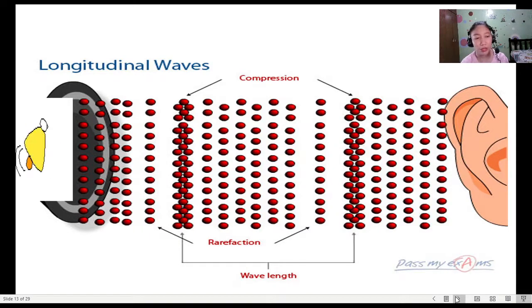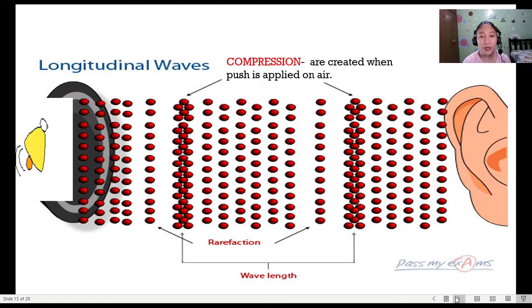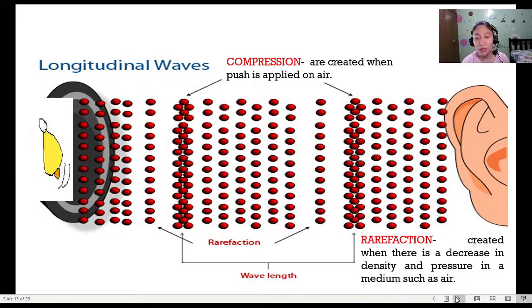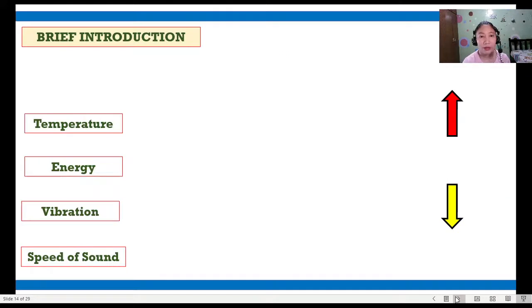When we say compression, na yan, nakita niyo yung two arrows. They are created when push is applied on air. Pag na-push siya, magsisiksikan sila, compression yun. And then, pag nabatak sila, rarefaction. Rarefaction is created when there is a decrease in density and pressure in a medium, such as air. Yung ating air, layo-layo. Less dense siya. Decrease ang kanyang density. Kaya, itsurang layo-layo. That's rarefaction. From rarefaction to another rarefaction, isang wavelength yun. From compression to another compression, one wavelength ulit yun. That's how it goes.